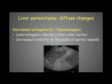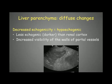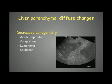With decreased ecogenicity, we observe increased visibility of the walls of the portal vessels, which appear much more prominent than normal. The liver edges may also appear rounded. The main causes of decreased ecogenicity of the liver parenchyma are acute hepatitis, congestion, lymphoma, and leukemia.